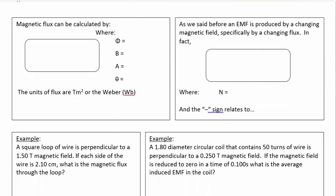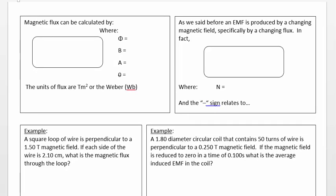So there's a few formulas we need to know in order to actually calculate the amount of voltage produced or EMF produced. And the first is the formula for magnetic flux. Now the symbol for flux is the Greek letter phi. And phi is equal to B times A times the cosine of theta.